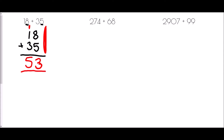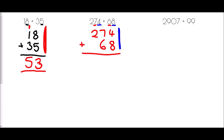Next, looking at 274 plus 68. I begin with 274 but again I need to think about my units: the unit is 4, and the unit is 8, so the 8 must line up with the 4. In terms of the tens, the 6 and the 7 are our tens so they should line up. We put our add sign and a line underneath, and again we start at the furthest right-hand side.